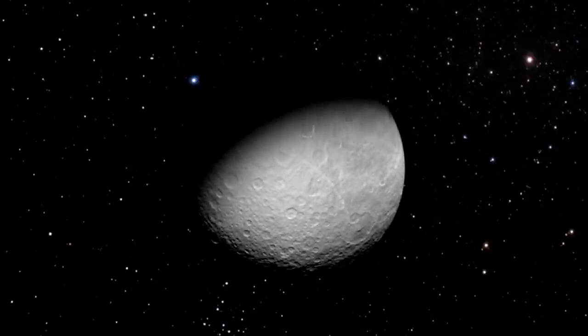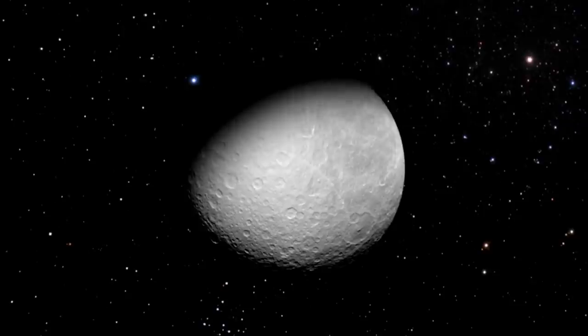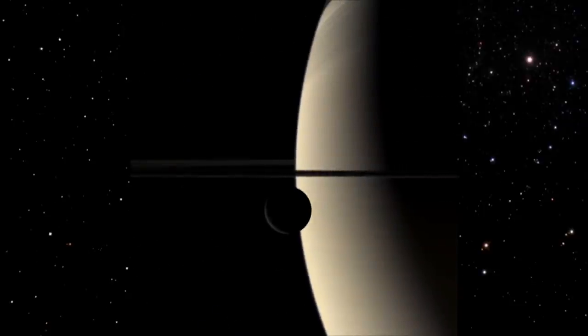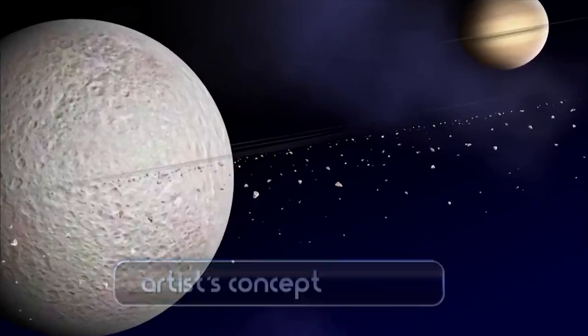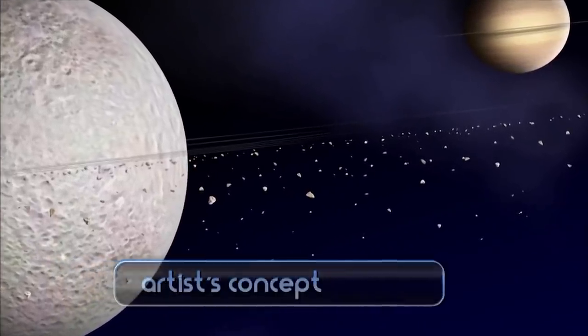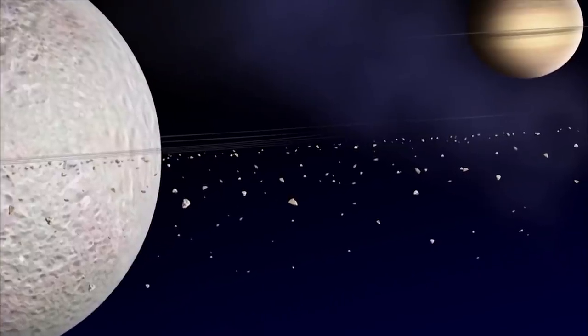But the biggest surprise came from Rhea. Cassini found indirect evidence this moon is surrounded by a dark, dusty ring, making Rhea the only moon anywhere in the solar system with a ring of its own.